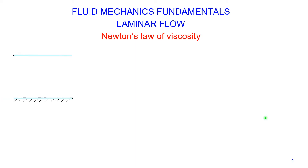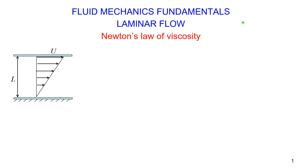Let's consider the setup for our problem. We have two plates. The lower plate is fixed and the upper plate is not fixed. The distance between the two plates is L. The space between the plates is filled with fluid. The upper plate travels at velocity U. Since we have laminar flow, the velocity profile across the two plates is linear and changes from 0 on the lower plate to U on the upper plate.